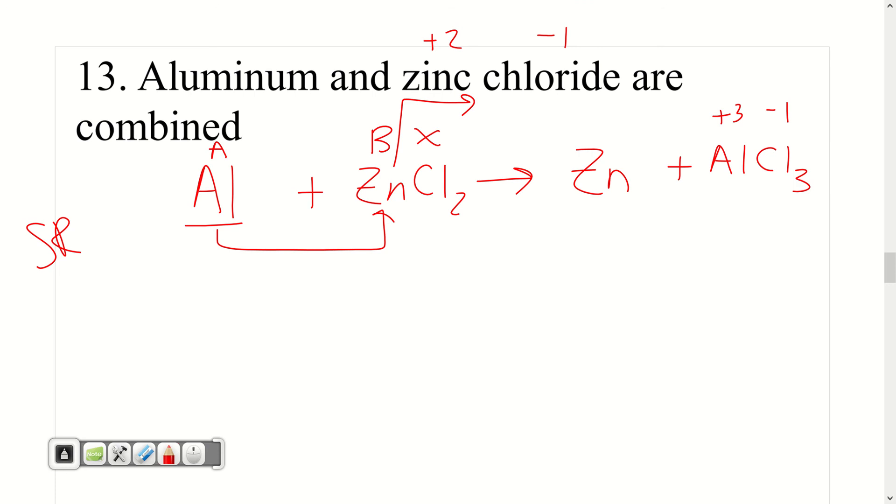And then we balance. One Al, one Al. One Zn, one Zn. Oh, this is going to be easy. Two Cls, three Cls. Darn. As you probably have practiced quite a bit, two and three, we raise to six. So I'm going to put three right there and two right here. And then I have to go back because now I have one Al and two Als, so that's two. I have three Zns and one, so that's three. And there you go.